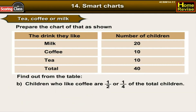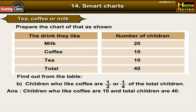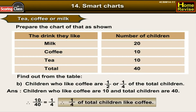Are children who like coffee half or one fourth of the total? Children who like coffee are 10, and total children are 40. So 10/40 = 1/4, which means one fourth of the total children like coffee.